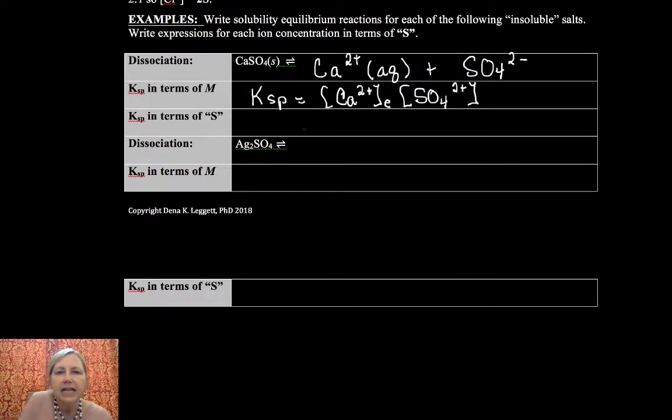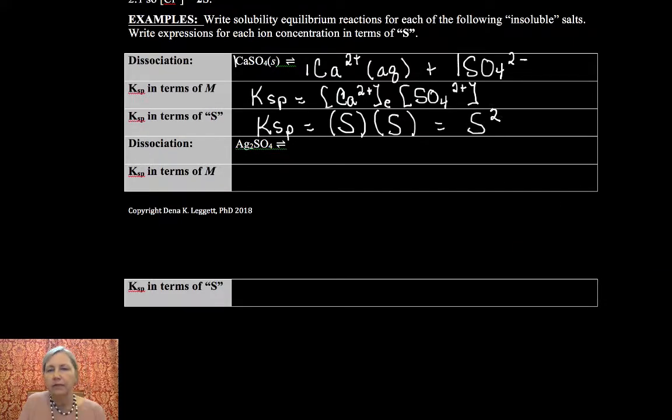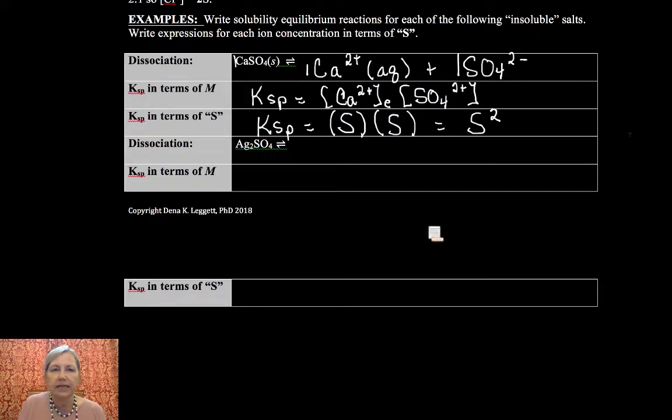You won't normally see that E there. I'm putting it there just to make a point, and my sulfate ion at equilibrium. Okay. Now, in terms of the solubility, since I have a one-to-one mole ratio with my sulfate, it's also equal to the solubility. So Ksp is equal to S squared.